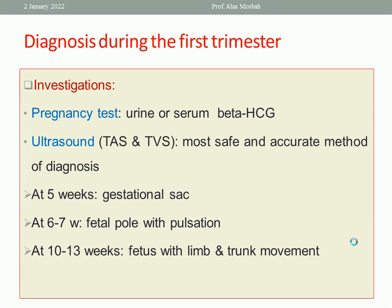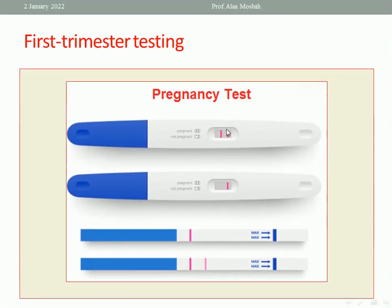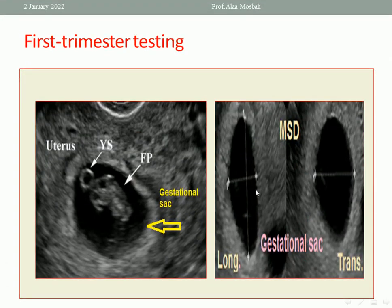What will we see by ultrasound? At five weeks gestational age, the gestational sac appears. Between six to seven weeks, the fetal pole with pulsation is visible. From 10 to 13 weeks, the fetus with limb and trunk movements can be seen. Regarding the pregnancy test, two lines means positive and one line means negative. This picture shows early pregnancy signs by ultrasound with the mean sac diameter — the gestational sac measured in two axes, longitudinal and transverse. On the left side, you can see the gestational sac, the yolk sac, the fetal pole, and in real-time ultrasound, you can see pulsation in the fetal heart.